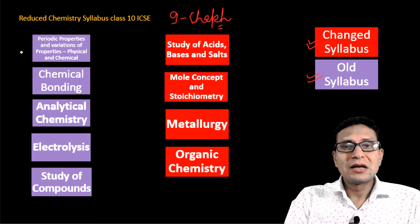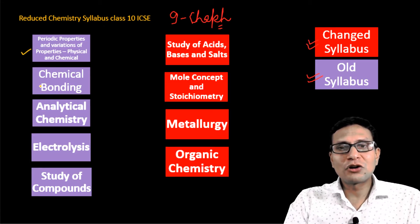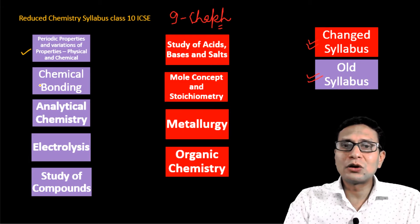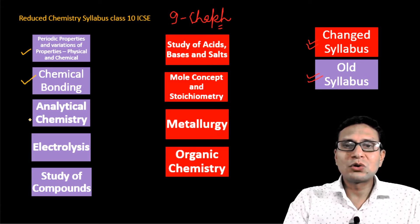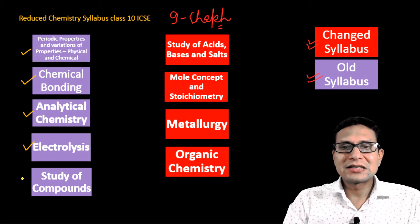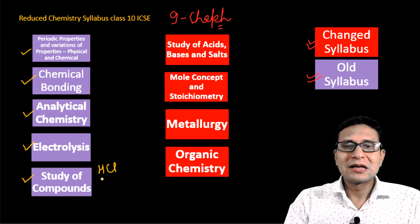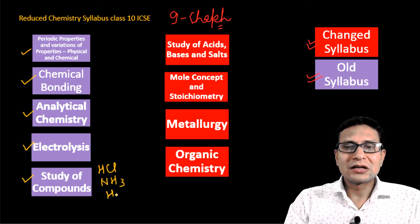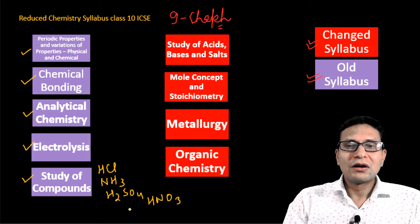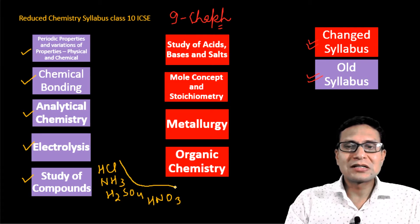Chapter 1 — Periodic Properties and Variation of Properties (physical and chemical) — no change. Chemical Bonding — no change. Analytical Chemistry — no change. Electrolysis — no change. In the Study of Compounds, you have HCl, NH3 (ammonia), sulfuric acid, and nitric acid. These 4 sub-chapters are included in Study of Compounds, and there is no change here either.